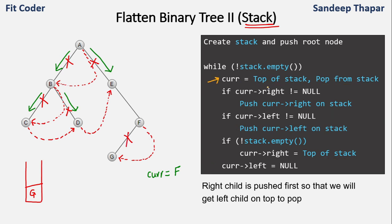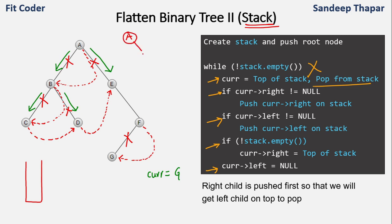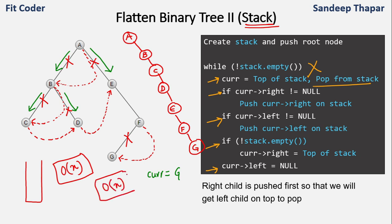Current becomes G, we pop from the stack — stack is now empty. Right of G is null, left of G is null, stack is empty so that if condition is also false. Left of G is set to null. In the next iteration the stack is empty, so the while loop terminates. Redrawn: A → B → C → D → E → F → G, all via right pointers, all left pointers null. Time complexity is O(n) but space complexity is also O(n) due to the explicit stack.